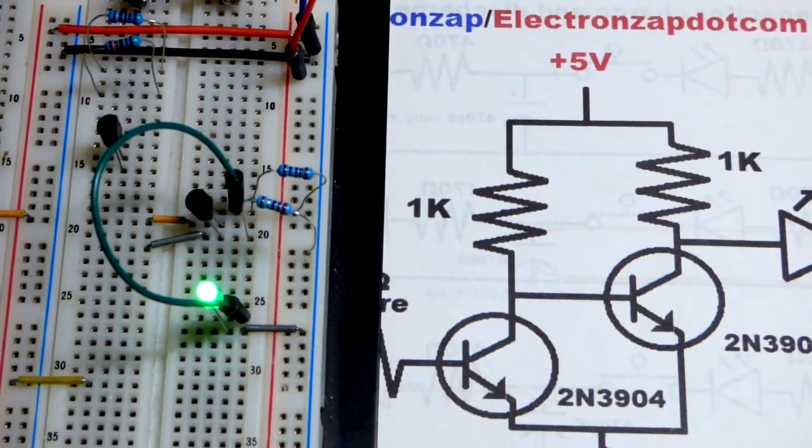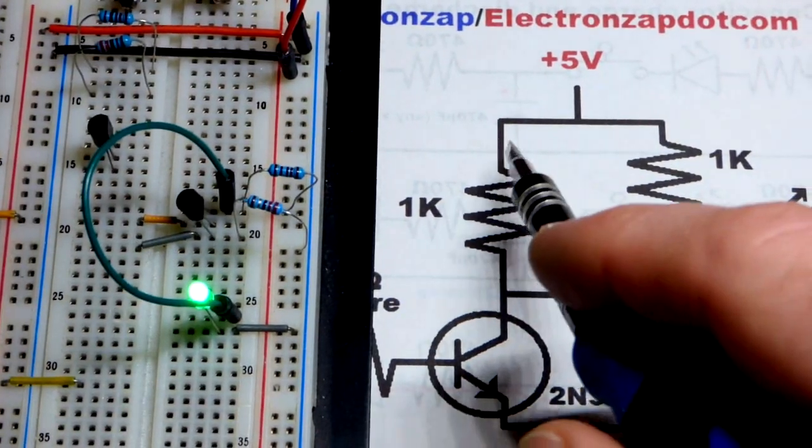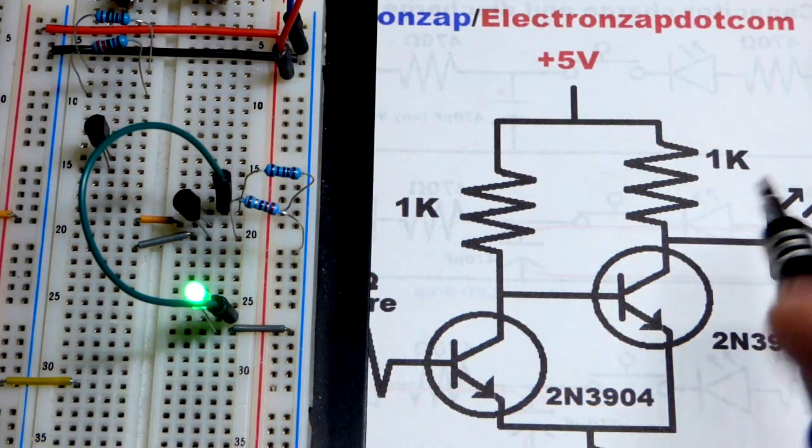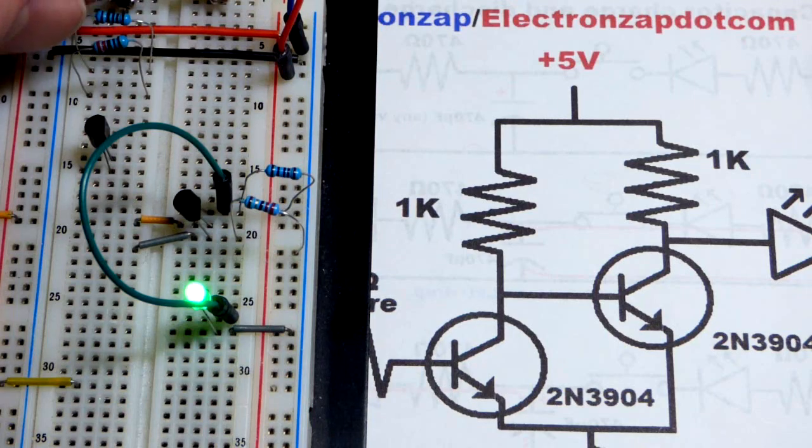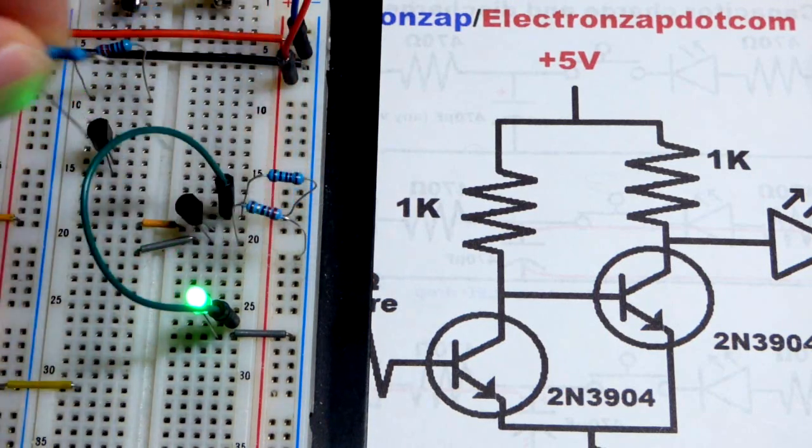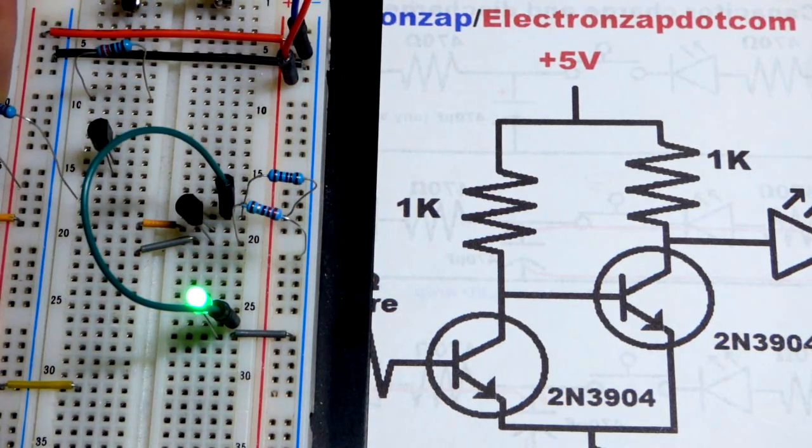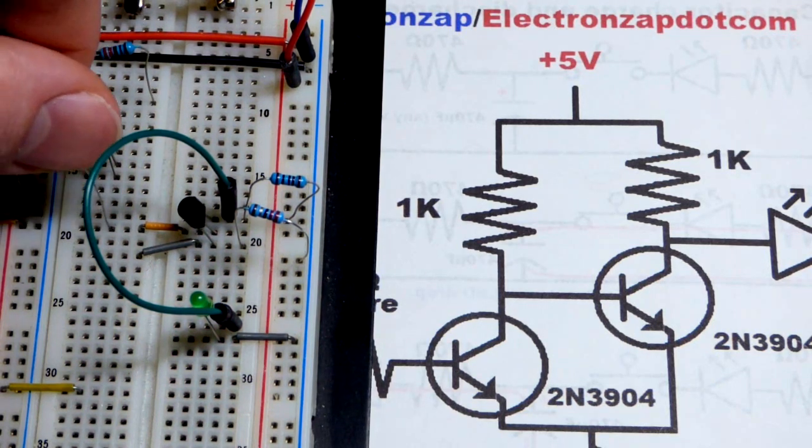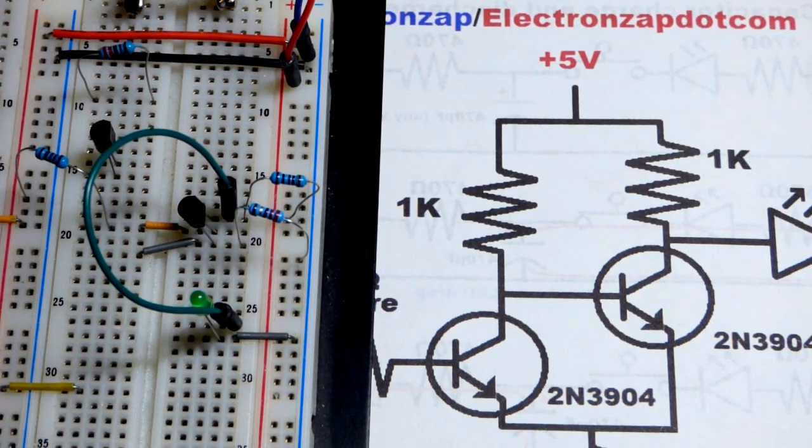What we're going to do is come to the one kilo ohm resistor from the positive rail. So right now, the LED is normally on. We're going to grab one kilo ohm and put it to the positive rail, and then that jumper that goes to the base. Now the LED went off.